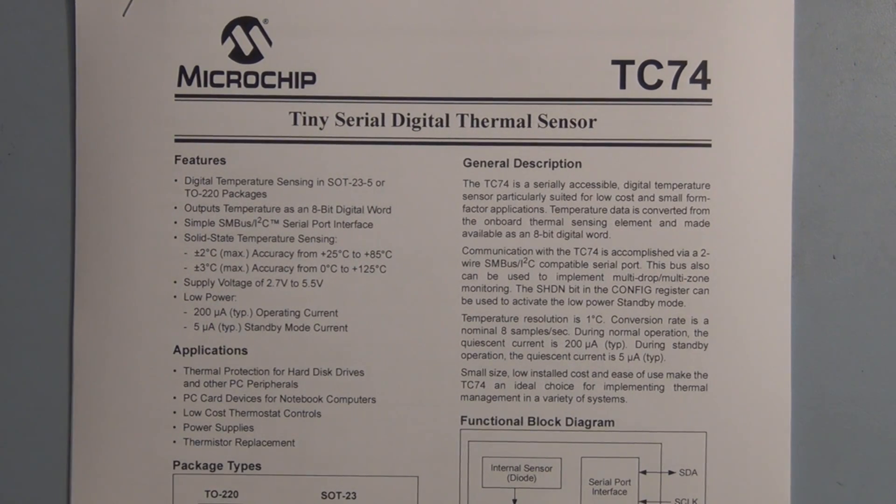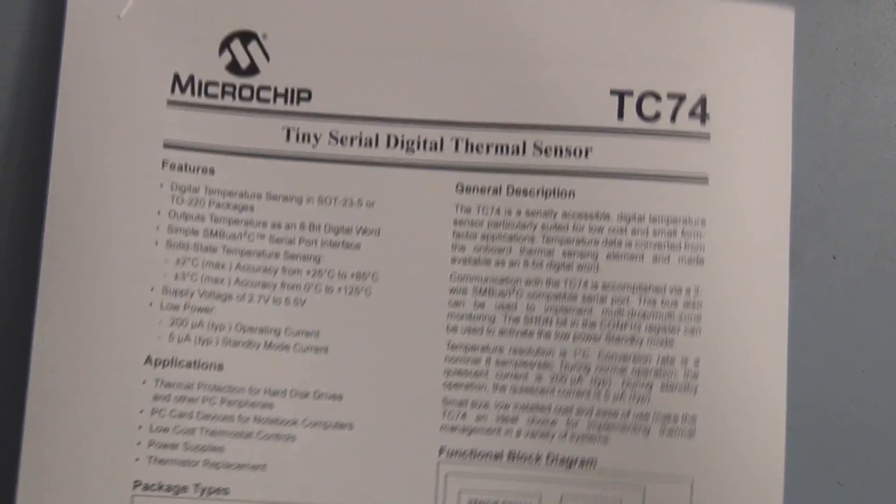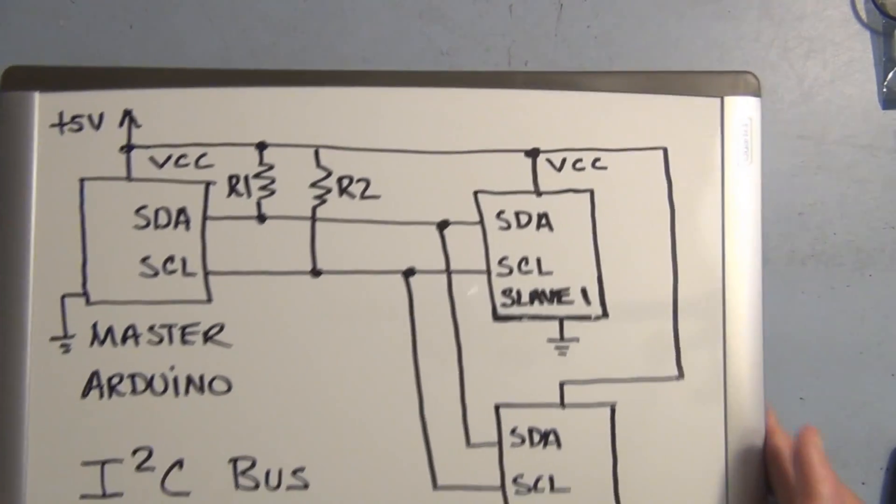So again, this is an I2C device and it only requires two wires to communicate with it. This is a serial data and a serial clock line. So let's take a look at how I2C communications work.